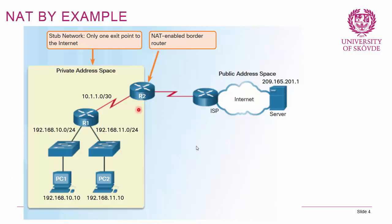In this example, we have Router 2 with internal networks using private address spaces. Whenever any device in these networks wants to communicate with the outside world, it gets a public IP address from Router 2 to use for the duration of the communication. This means the address can be reused by other devices, so we can use far fewer public IP addresses.